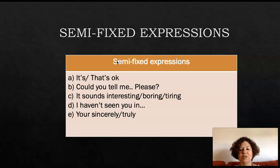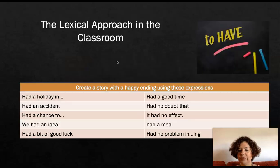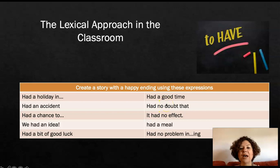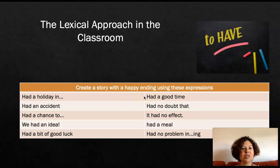So we have the four categories: words, fixed expressions, semi-fixed expressions, and collocations. Now, how do you use this in your classroom? Here is one task for your students. We are going to work with the word 'have': 'had a holiday', 'had an accident', 'had a chance to', 'had an idea', 'had good luck', 'had a good time', 'had no doubt', 'had no effect', 'had a meal', 'had no problem in doing something'. I'm going to ask my students to create a story with a happy ending using all these expressions — these collocations, these chunks of language. My objective will be for students to create a story but to learn vocabulary in chunks of language.